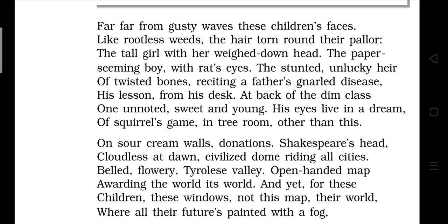One by one the poet describes the children. There is a tall girl with her head weighed down — she may be older than the rest, uncomfortable, burdened with household chores, or simply weighed down by the weight of poverty, which is why her head is bowed. Then there is the paper-seeming boy with rat's eyes — paper-seeming means very thin like paper, showing their malnourished condition; rat's eyes show a greed for food because he is not getting proper nourishment.